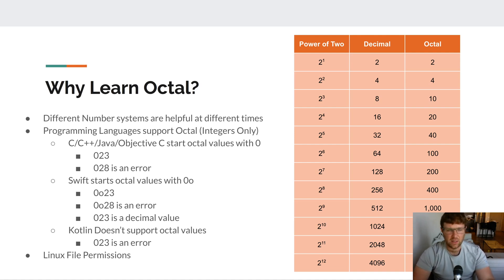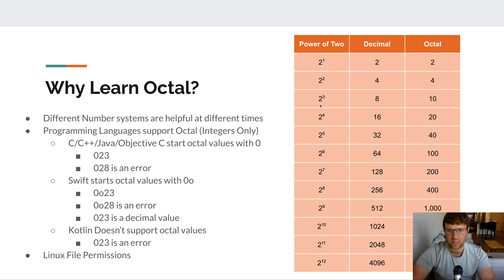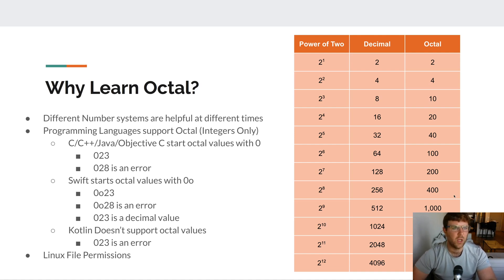Why learn octal? It's not something you need to memorize, just a concept to know. In programming, different numbering systems are useful at different times. Since everything in a computer is ultimately binary — ones and zeros — octal can help. Looking at powers of two in decimal, they can feel random, but in octal they appear as more rounded numbers: 2, 4, 10, 20, 40, 100, 200, 400. So working with binary numbers in octal can make things a bit easier.